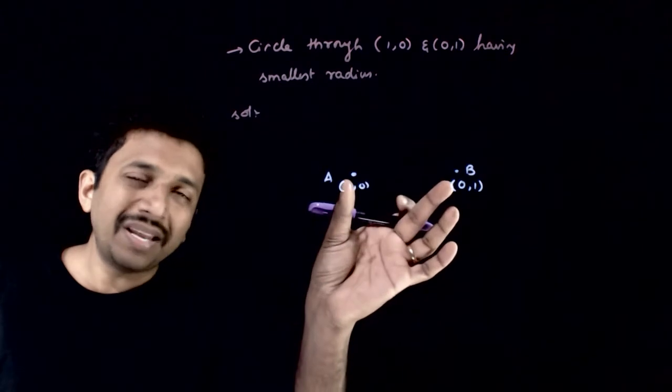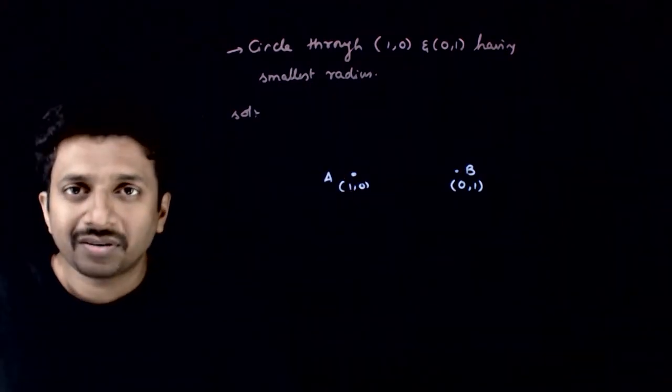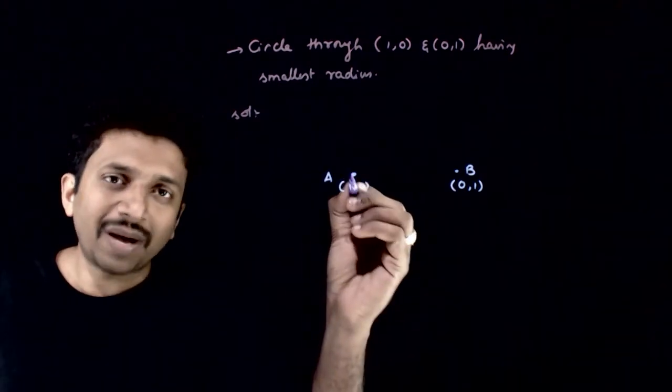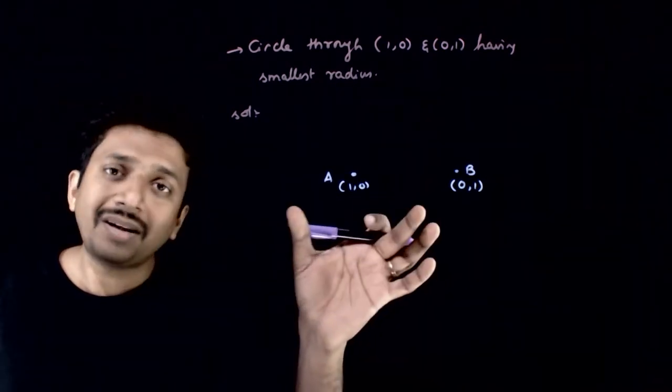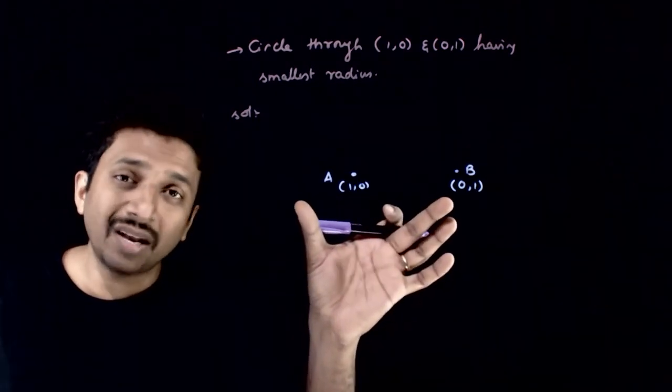You have many circles passing through these two points - infinite number of circles, for instance. But you are asked to find the circle with smallest radius.